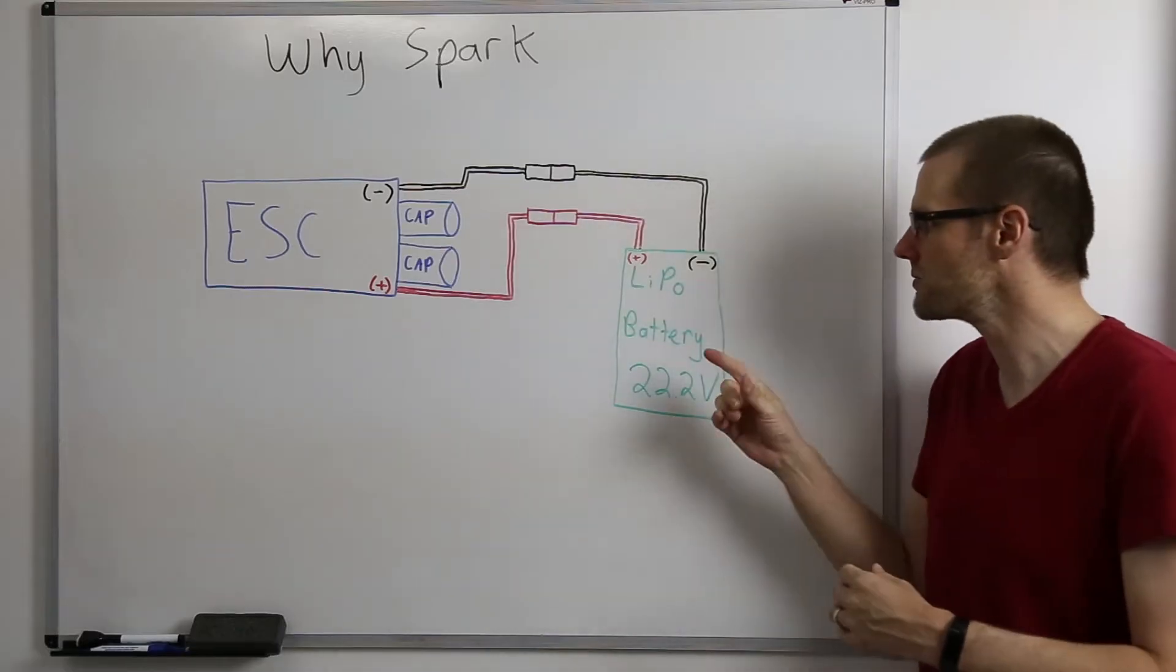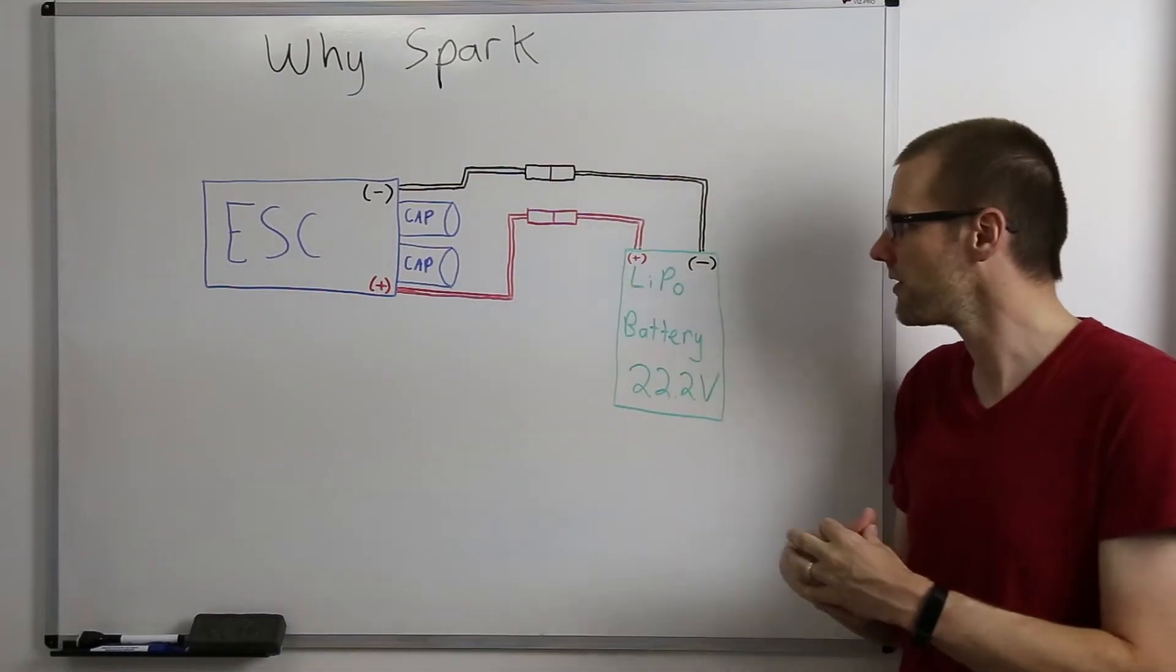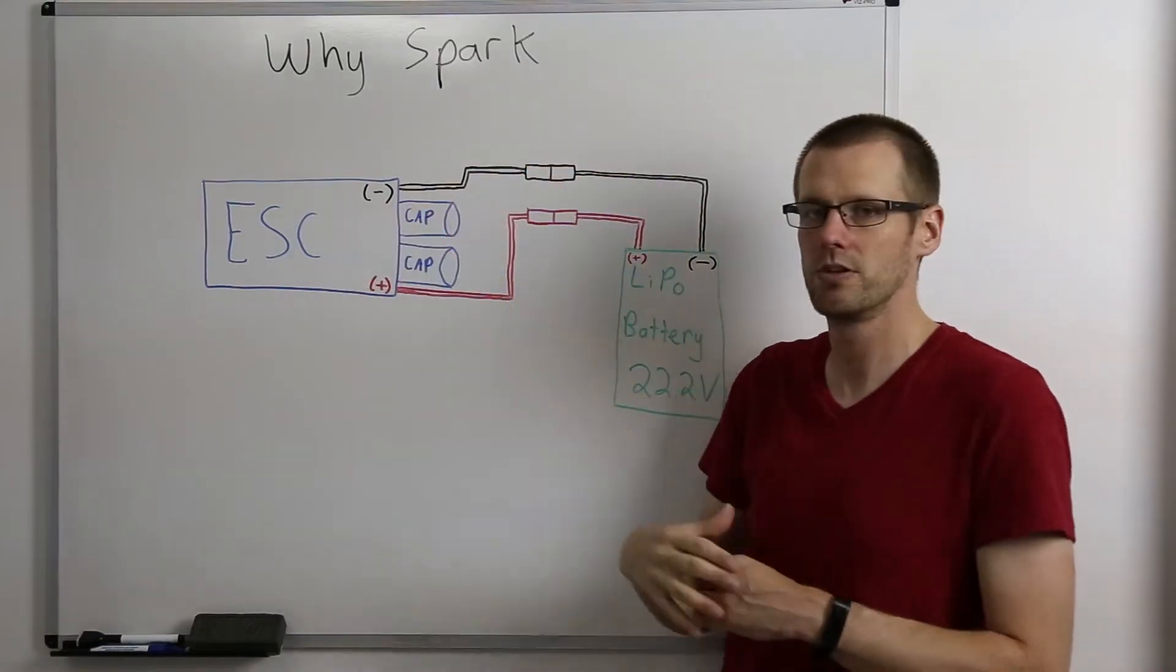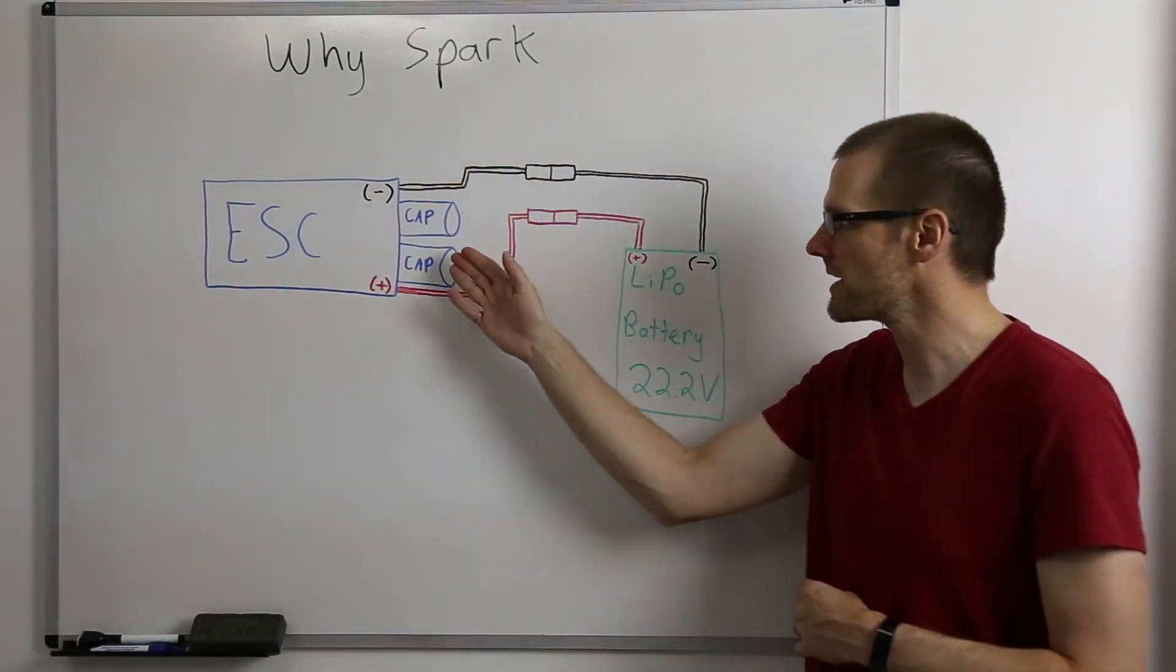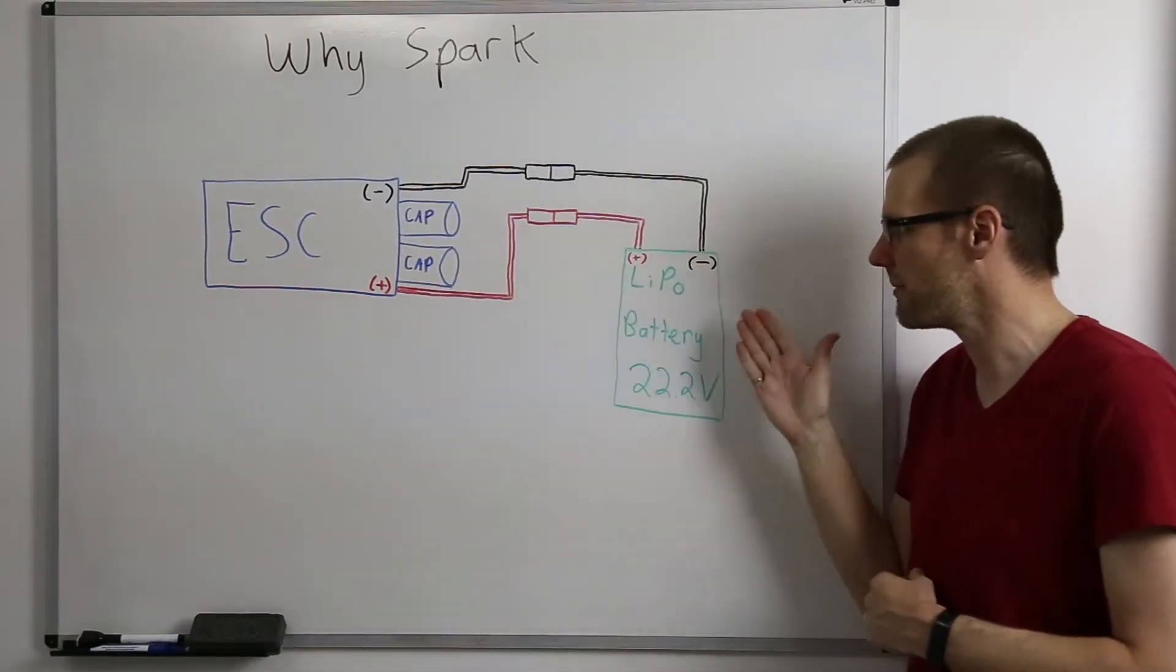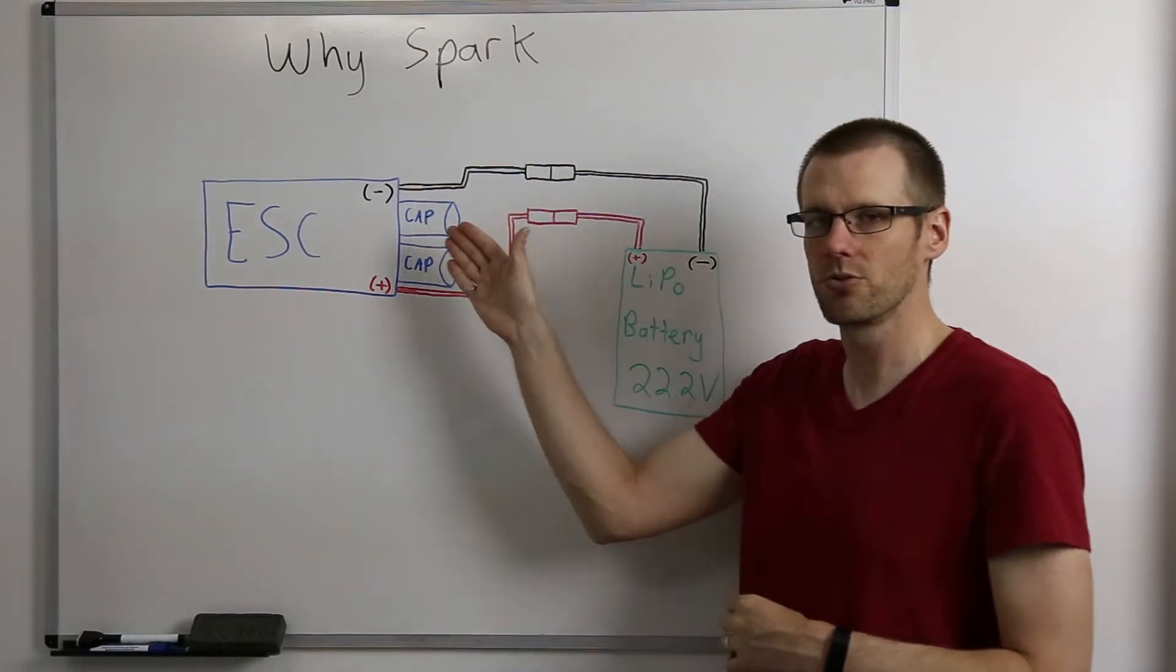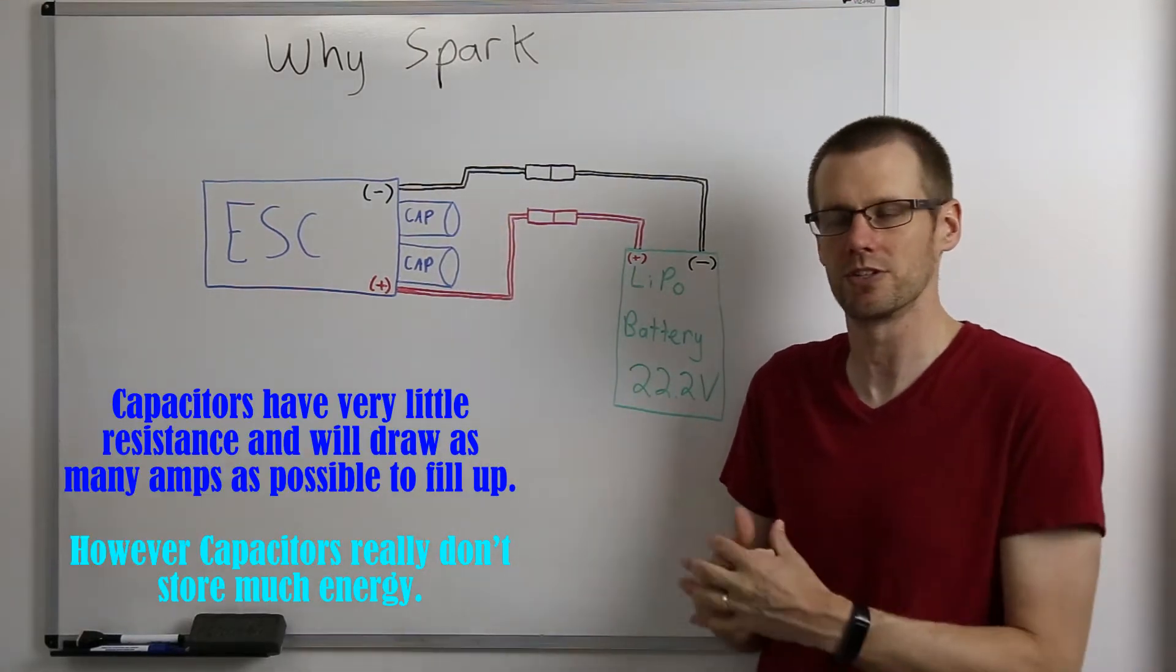Now, essentially, what happens is as we plug our battery pack into our ESC, power flows from our battery pack into the electronic speed control. And this is where the capacitors fill up to the voltage matching that of the battery pack. Capacitors are essentially going to act as a short circuit for lack of a better way of describing it.